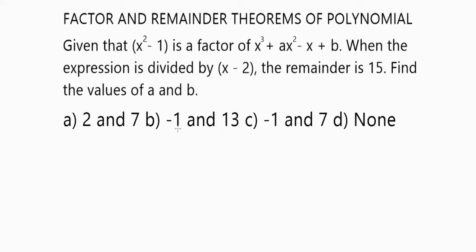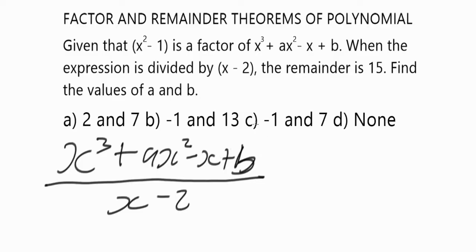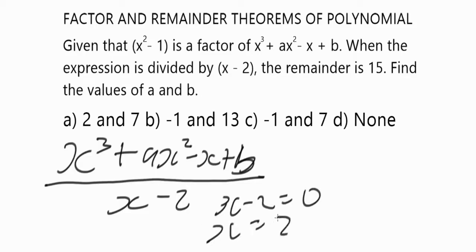Find the values of a and b. Now the very first thing you have to do — this is our dividend: x cubed plus ax squared minus x plus b. This is the divisor: x minus two. The outputs will be our quotient, but we are not asked to find the quotient. We are looking for the values of a and b such that when you plug them in the numerator and divide by x minus two, you get a remainder of 15. So x minus two set to zero gives x equals two.